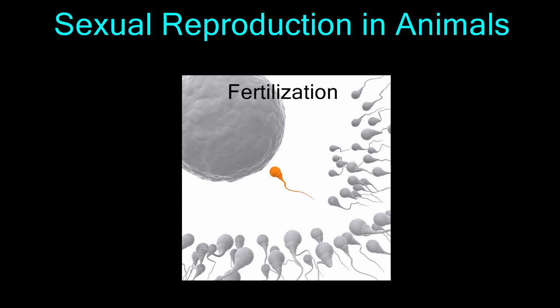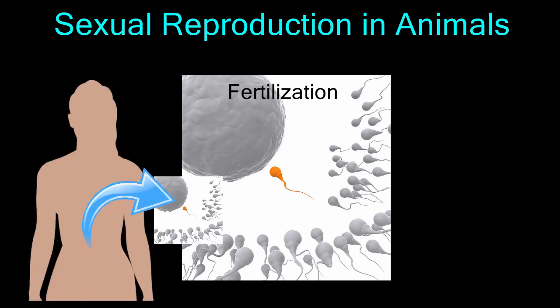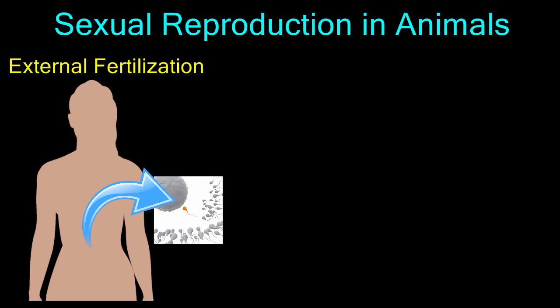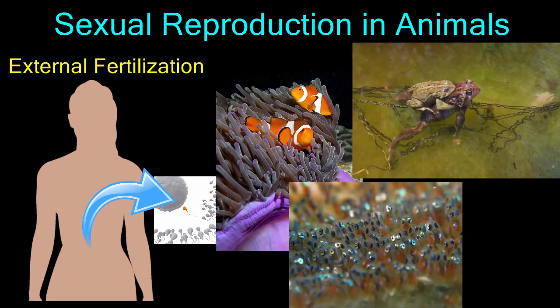There are two locations where fertilization can take place in animals: outside the body, as in external fertilization, and inside the body, as in internal fertilization. External fertilization allows the egg and sperm to meet outside of the animal's body. Many fish and amphibians like frogs use external fertilization. During external fertilization, the female lays her eggs in the water, then the male releases his sperm over the eggs, and the sperm swim to the eggs and penetrate their outer membrane to fertilize them.